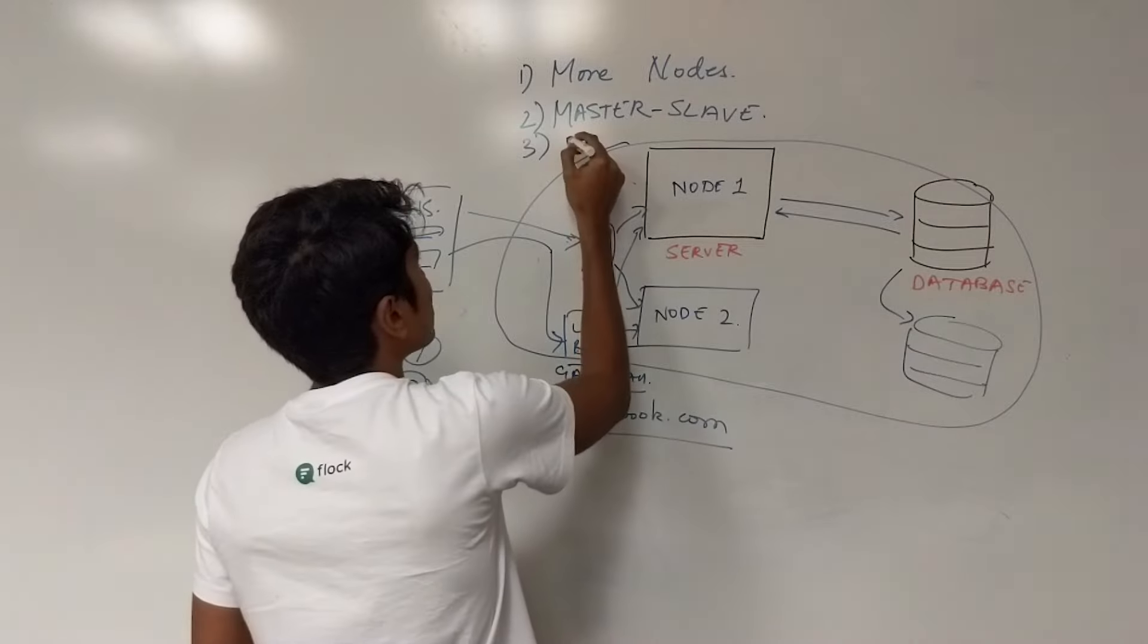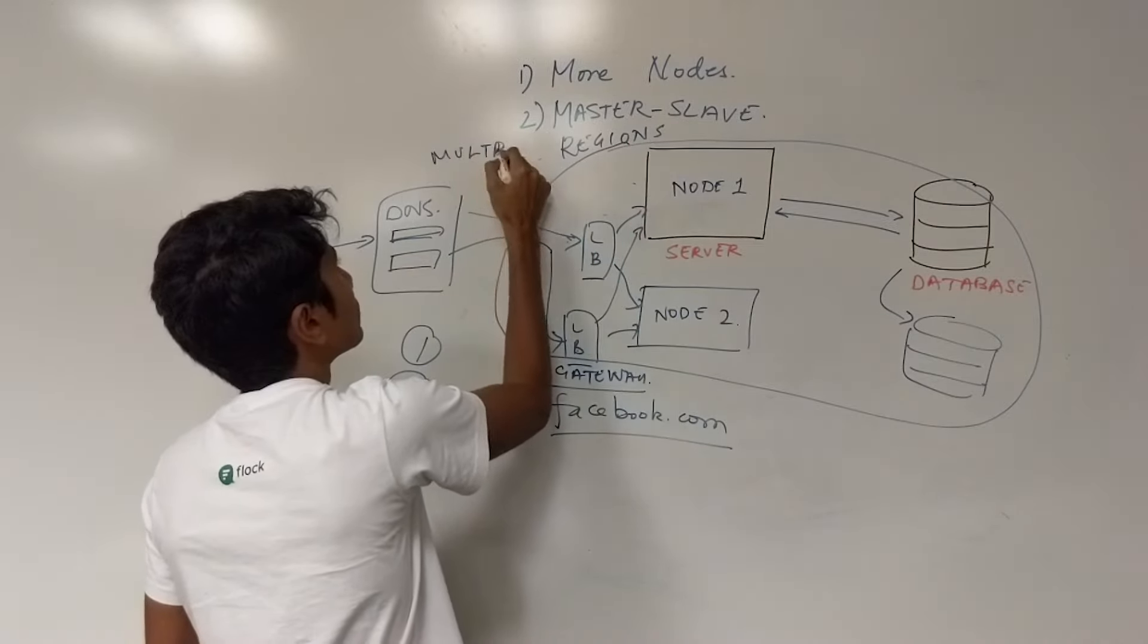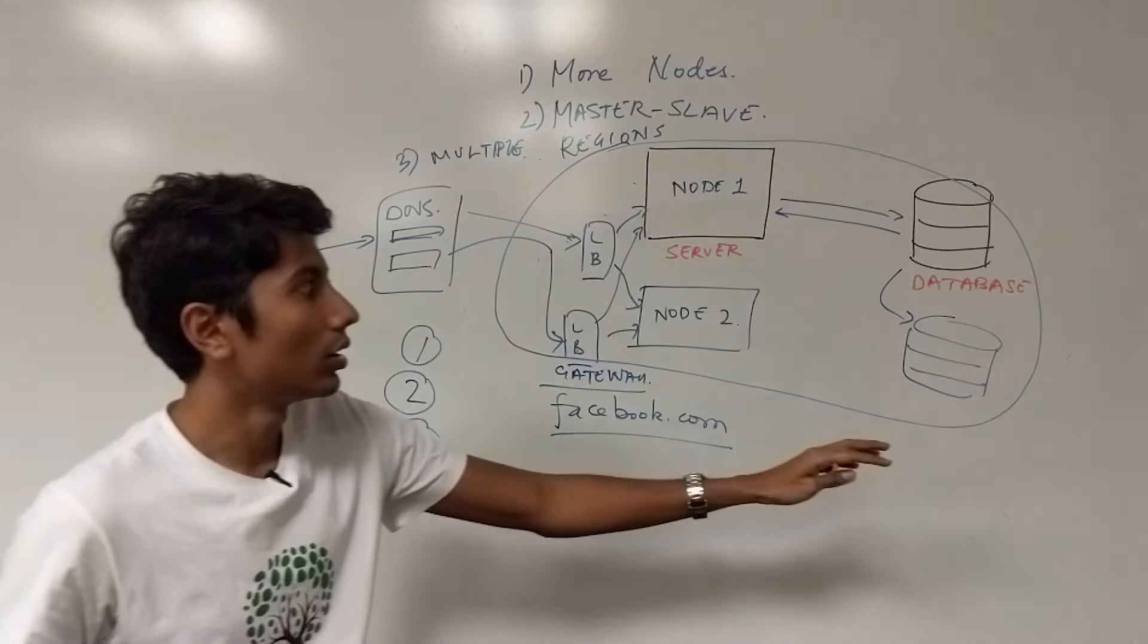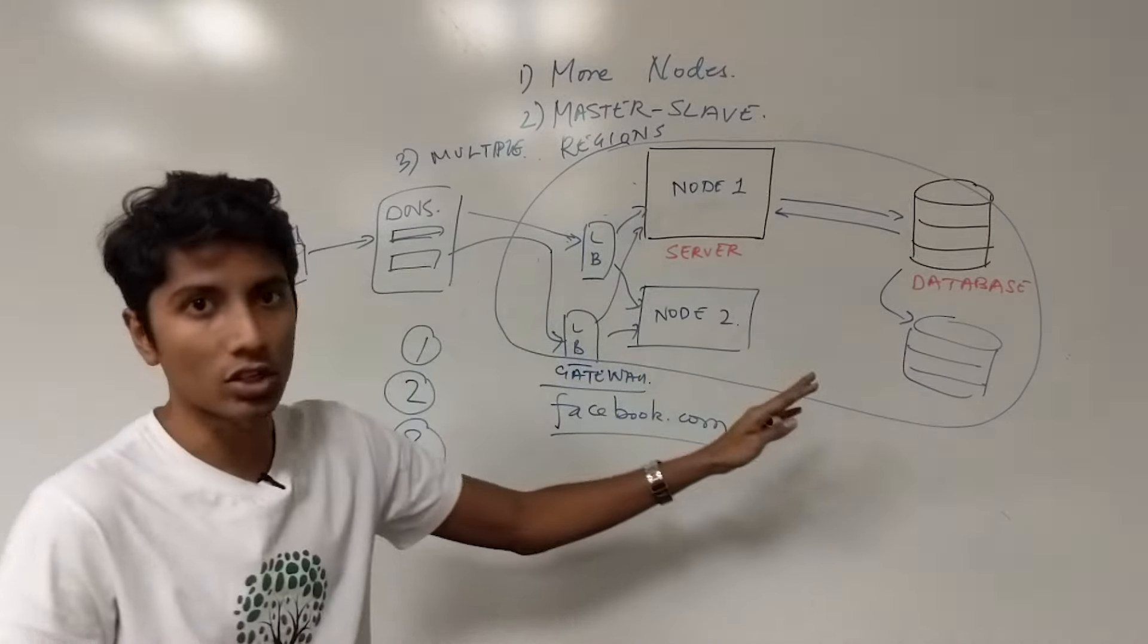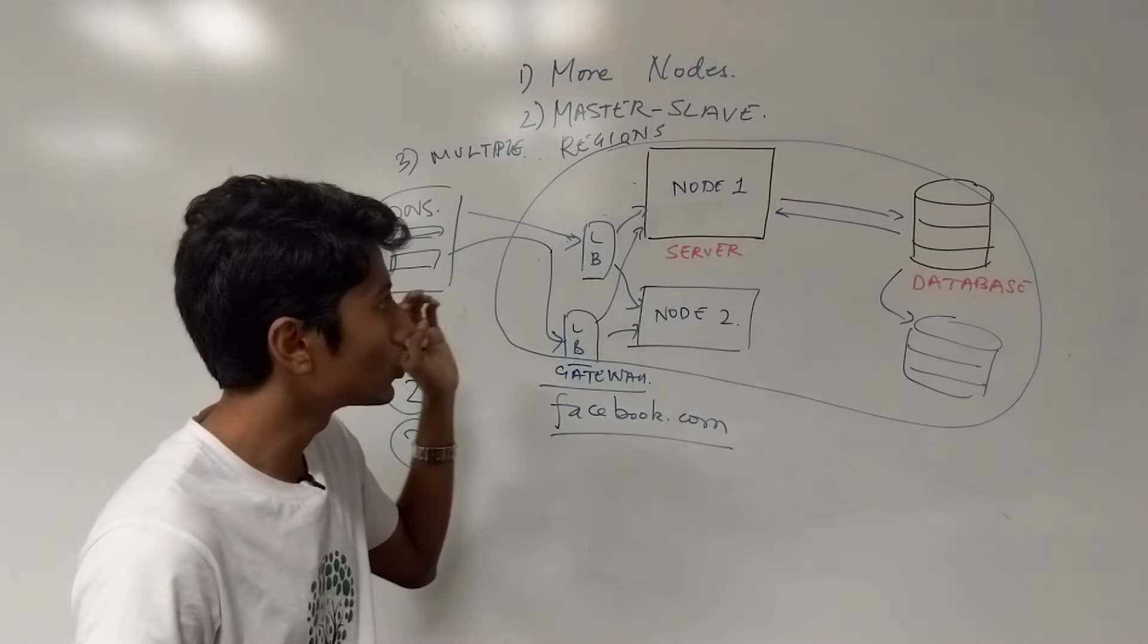So in that case, what you do look for is regions and multiple regions. This, of course, is mainly after you've taken care of the entire process of getting rid of single points of failure through DNS, through load balancers, through nodes.